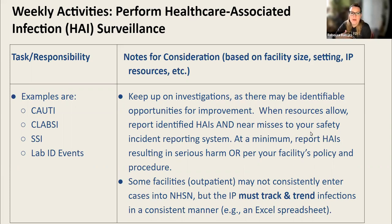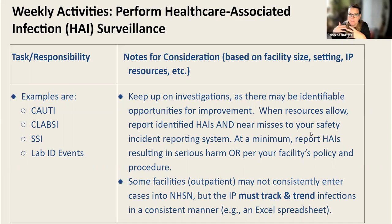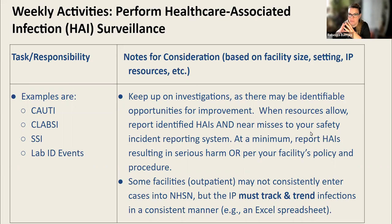When your resources allow, identify your HAIs and your near misses — those circumstances where an HAI was likely to occur but didn't happen. For example, maybe you identified a positive blood culture with a central line in place, but the patient didn't actually meet the definition of a CLABSI. But during investigation, you realize the line was in longer than your policy indicated — that's a near miss. Report that through your safety structure so people can learn from it. At a minimum, you want to report HAIs that resulted in serious harm, and always follow your facility's policy and procedure for reporting.